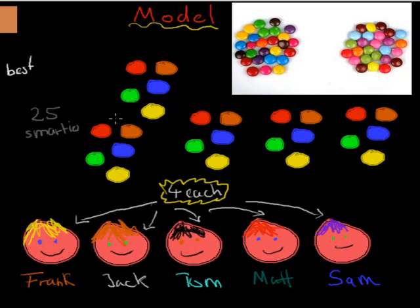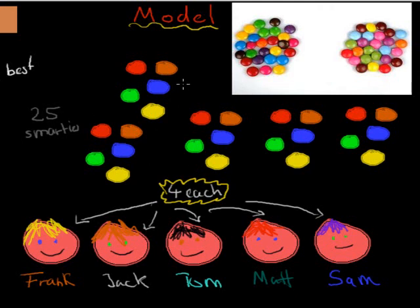So we're asked to model natural selection. A model doesn't have to be realistic — it just has to be some way that we can show how natural selection works and make it easier to understand. What I've chosen here is 25 Smarties. You can imagine those Smarties come in different colours, and the different colours determine what flavour it is. I've got 25 Smarties in total, five of each colour.